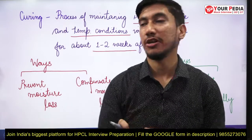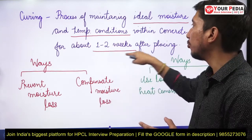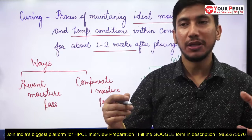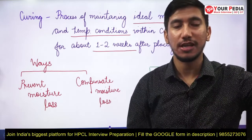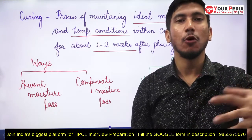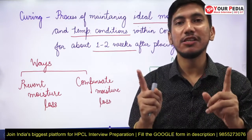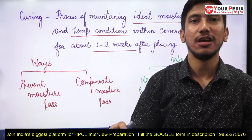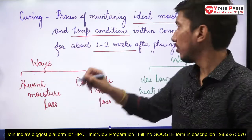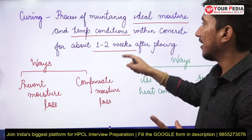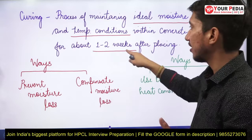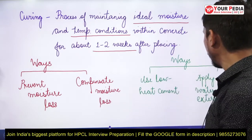These temperature and moisture conditions must be maintained for about one to two weeks after placing. This is because hydration of cement is very fast during the initial stages — in the first 10 to 14 days, concrete develops about 80–85% of its strength. This period is fundamentally important as most of the strength development, heat of hydration release, and cement grain hydration occurs during this time.